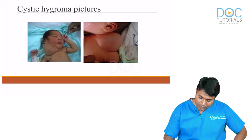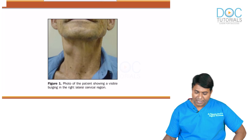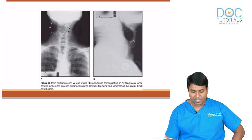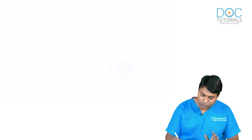The images show the cystic hygroma, thyrohyoid membrane anatomy, and a classical laryngocele on the right side of the neck. On X-ray, the typical air-filled cavities of laryngocele can be identified.